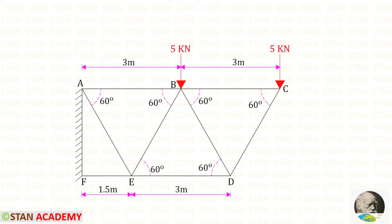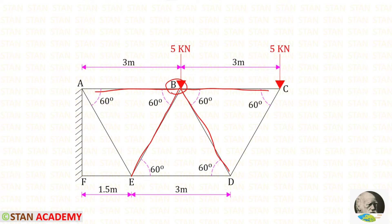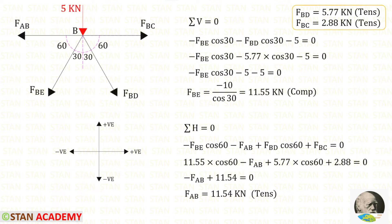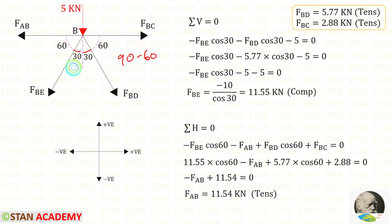Then we have to take joint B, because in this joint there are only two unknowns. At joint B we have the forces in BC, BA, BE, and BD, and also a vertical load of 5 kilo Newton. At this joint, first we apply the rule Sigma V = 0, because when we apply this rule there will be only one unknown. We know that these two angles are 60 degrees, so we can find the complementary angles: 90 minus 60 gives us 30 degrees.